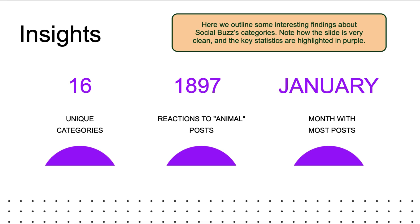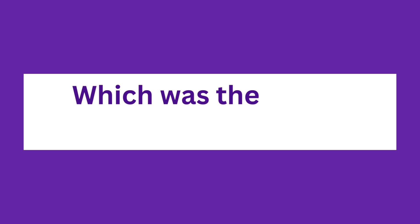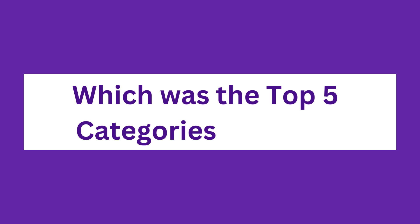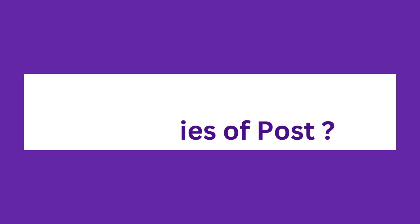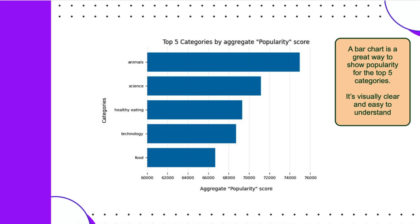Now let's move to the main question: which were the top five categories of posts? From the analysis, you can see that the top five are animals, science, healthy eating, technology, and food in descending order. The aggregate popularity score for animals was 74,965.